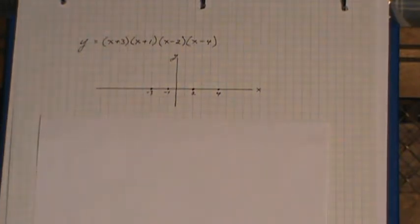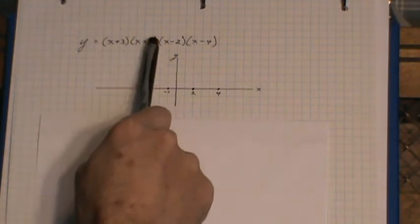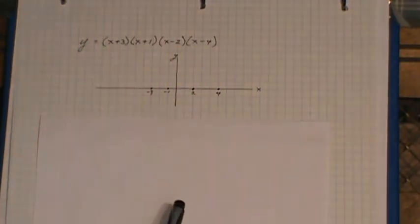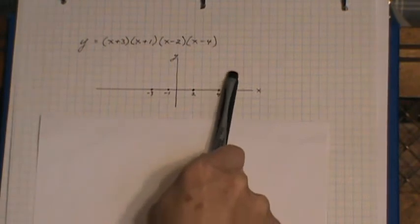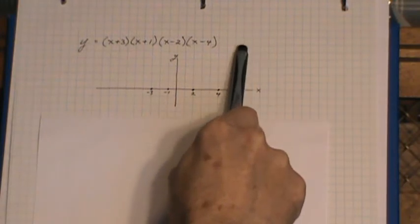Now, I always start from the right-hand side because whether it's an odd or even polynomial, if the leading term is positive, which this one is, it's x to the 4th, I know that my polynomial will end going up on the right-hand side. So I draw it from that side,